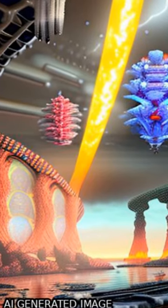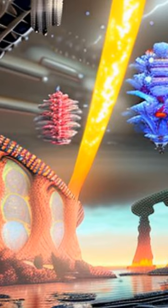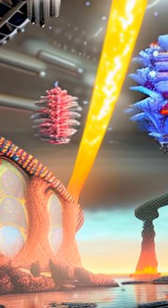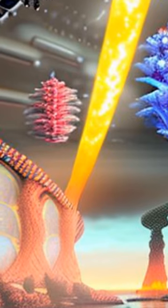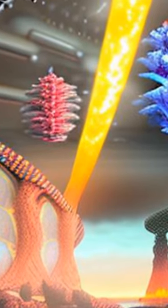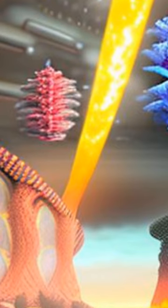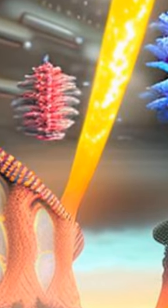The amidoxime groups act as chelating agents, allowing uranium to be selectively extracted from seawater. The uranium is then electrochemically reduced to an unstable UV intermediate, which is subsequently oxidized back to U-6 for collection.